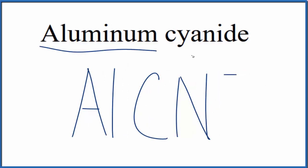So since aluminum is a metal, and then the cyanide ion is a group of non-metals, this is an ionic compound, we need to take charge into account.